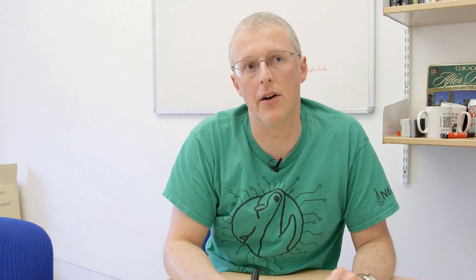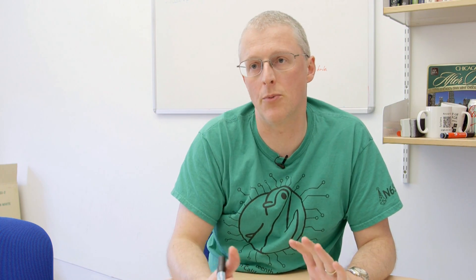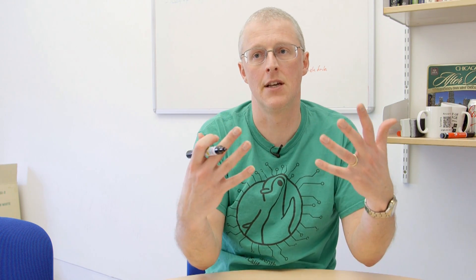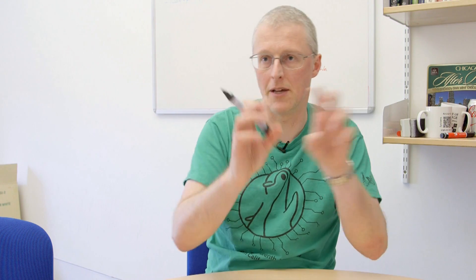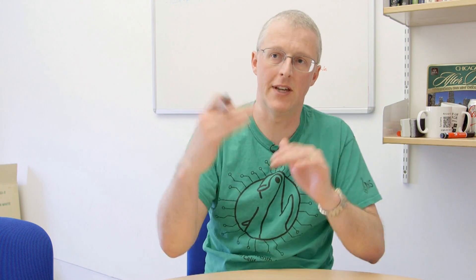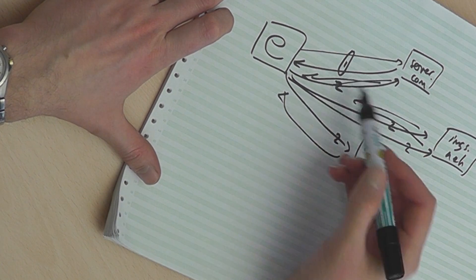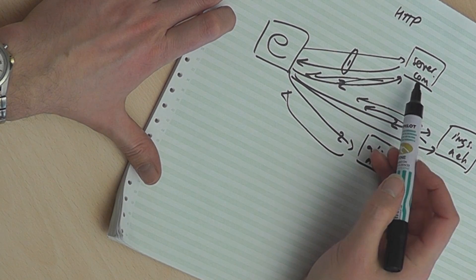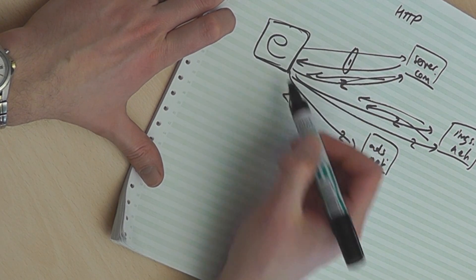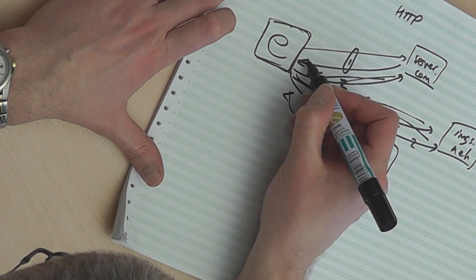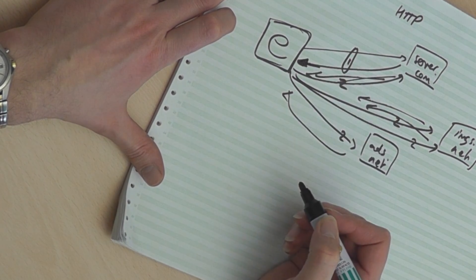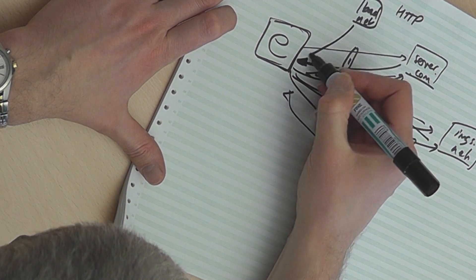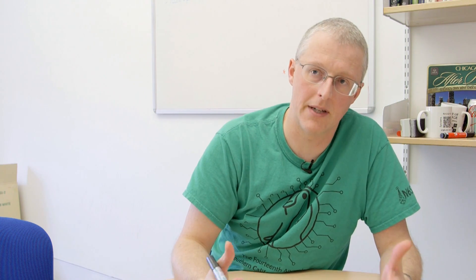If you look at a web page where this hasn't been fully thought through, or maybe you're accessing from a network that's a bit slower than normal, you might see this happening. As the page renders, things move around because bits of it are being filled in as responses come back from different servers. The problem is that any of these connections, if they're all using HTTP, then there's no way for the browser to verify that the data coming back is actually coming from the expected server. It could be coming from somebody else instead.